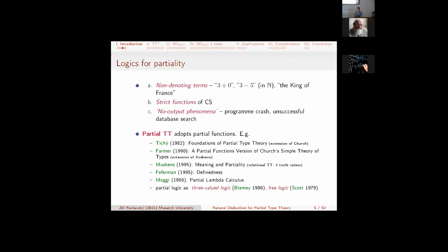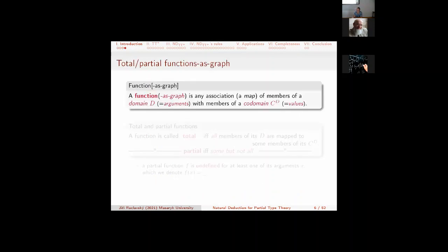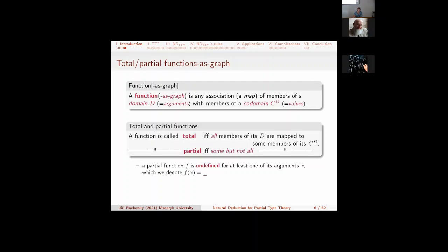There is a recent recurring attempt to model partiality by a 3-valued or even a 4-valued logic. This is, for instance, the contribution of Muscans and so on. Only to be sure about the terminology, by a function, I always mean a graph mapping elements of domain to codomains, while if all members of domain are mapped to members of codomains, then we speak about total functions. Partial functions are not all, but some of those members of domain to codomains.